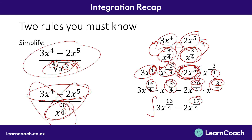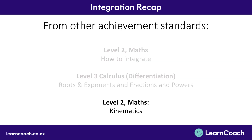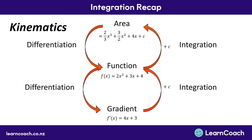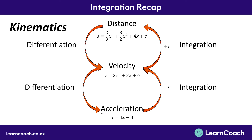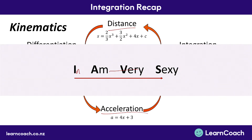Now we're on to the final part — kinematics. These were merit and excellence level questions at level 2, and they're still merit and excellence level questions at level 3, and not that much has changed. Kinematics has the same overall structure: instead of going from area to function to gradient, we go from acceleration to velocity to distance. We use the saying 'I am very sexy' — integrate from acceleration to velocity to distance, where distance is s. We'll do a quick recap of one of the tricky questions from the level 2 tutorial, which would still be an excellence problem at level 3.